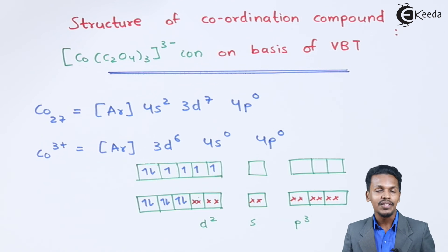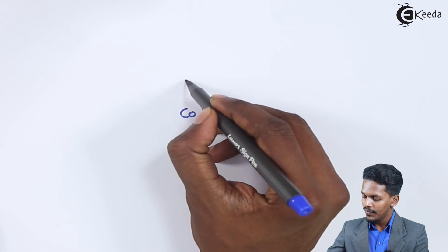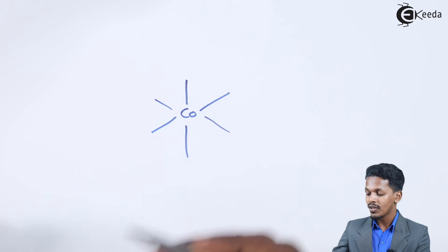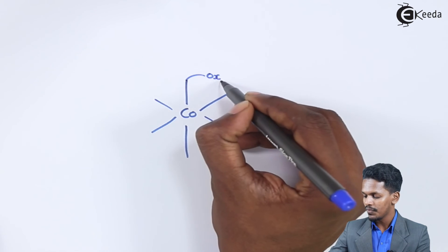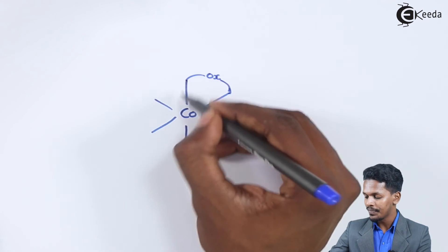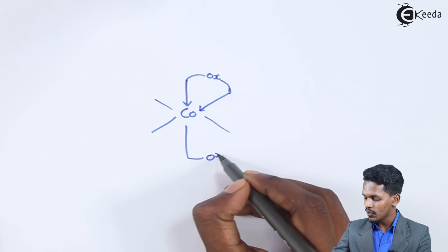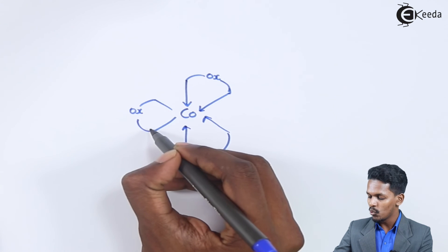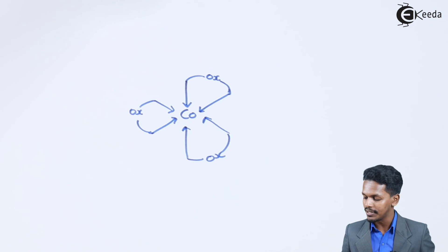Now let us discuss the structure of this cobalt complex. The coordination number of cobalt is found to be 6. With oxalato as a bidentate ligand, 1 mole of oxalato covers 2 positions by giving 2 lone pairs of electrons. All 3 oxalato ligands each provide 2 lone pairs of electrons, and thereby the structure formed is an octahedral structure.